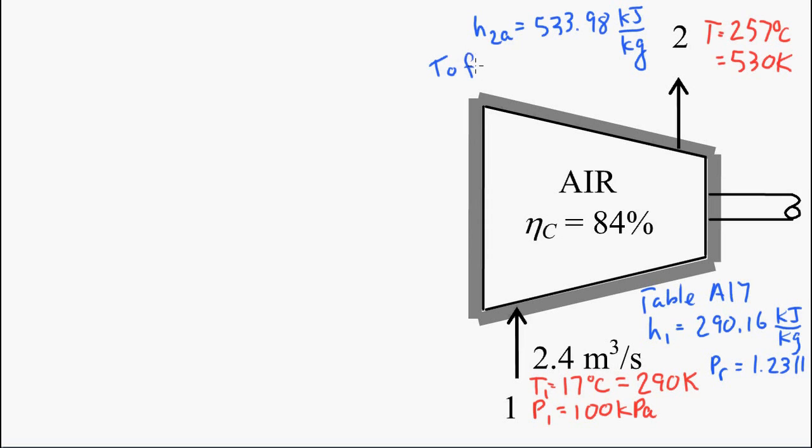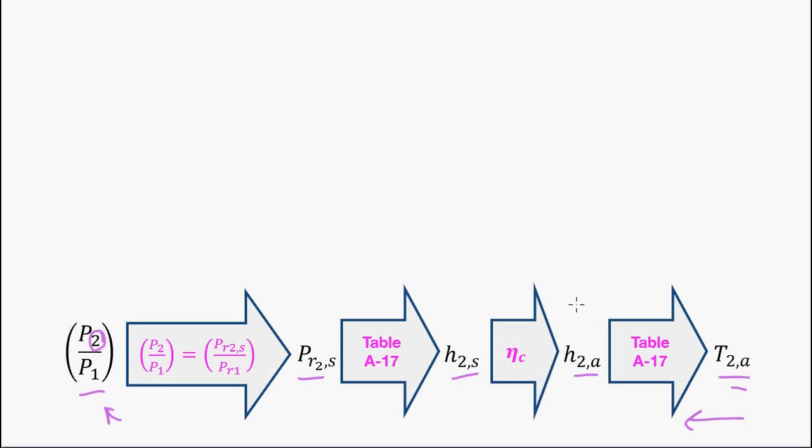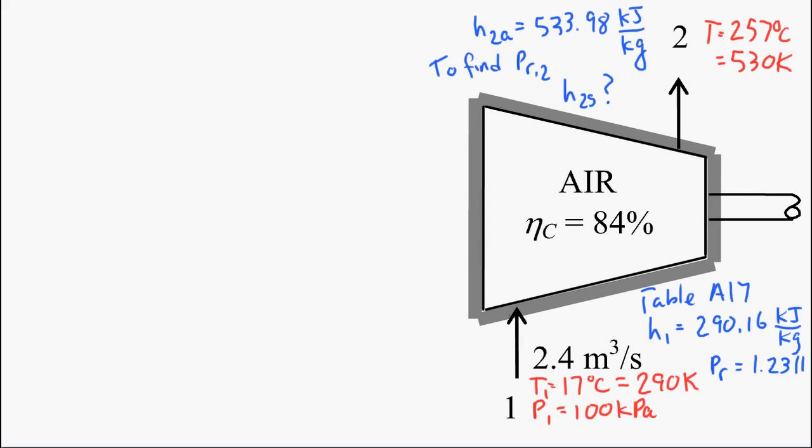Now, to find PR at state 2, we need the value of H2S. To do that, we look back here and we need to use the efficiency to find the value for H2S. We'll start off with our definition of compressor efficiency: H2S minus H1 divided by H2A minus H1.